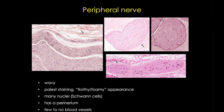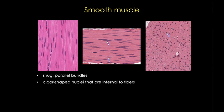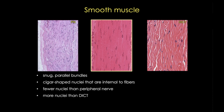Now let's compare to smooth muscle. Smooth muscle cells have unbranched, snug, almost parallel fibers. A small smooth muscle bundle can resemble peripheral nerve, but it lacks that connective tissue sheath or perineurium. Smooth muscle cells have very characteristic S- or cigar-shaped nuclei, and unlike peripheral nerve nuclei, they are internal to the fibers — you can see that best in the transverse section on the right. In terms of number of nuclei, smooth muscle has fewer nuclei than peripheral nerve and more nuclei than dense irregular connective tissue.